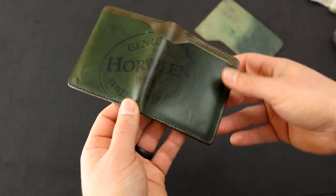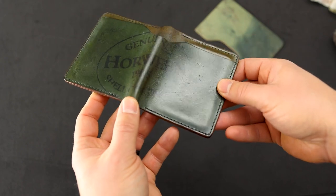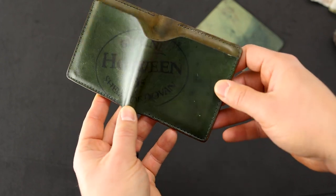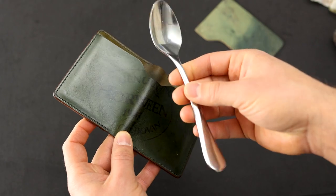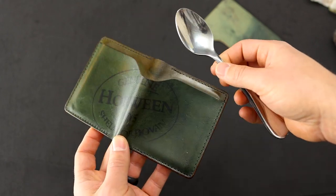I wanted to show you how you can get any veg tan leather to sort of have this same sort of luster and you can get this kind of luster with a spoon. I'd like to show you how to do that with just a spoon and some water.